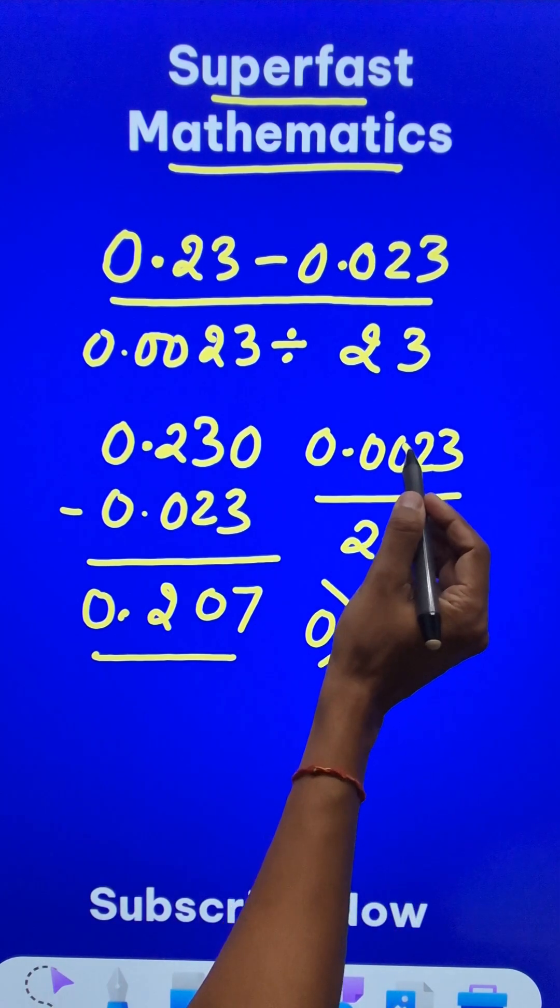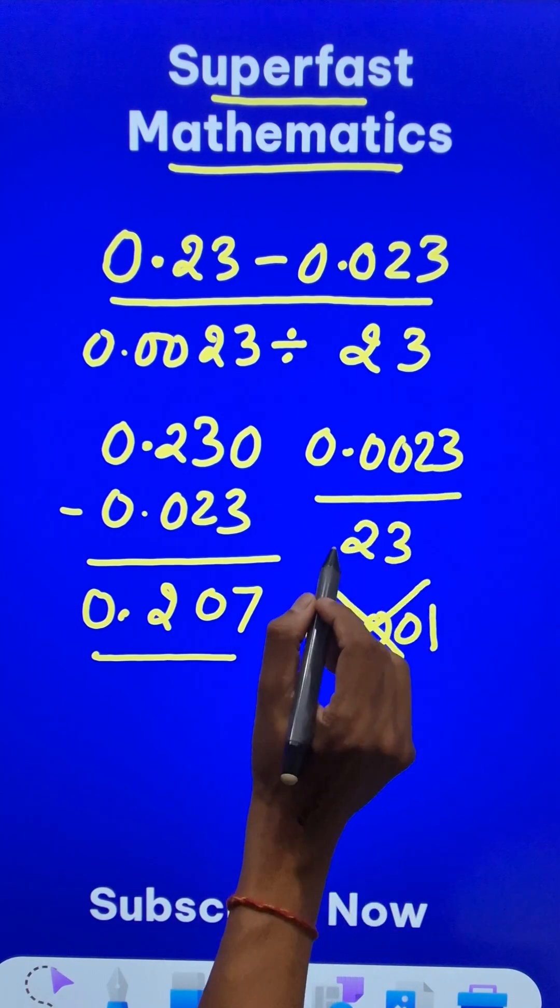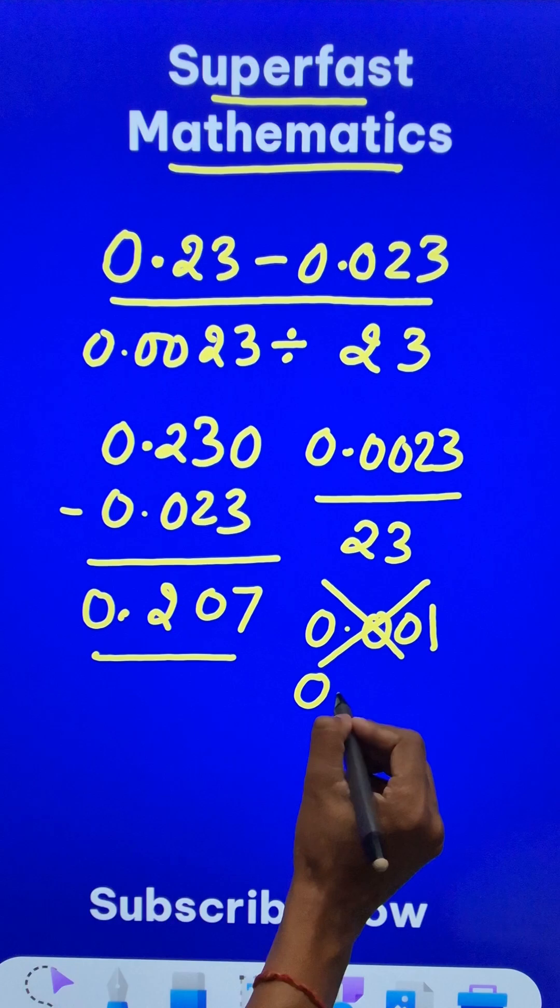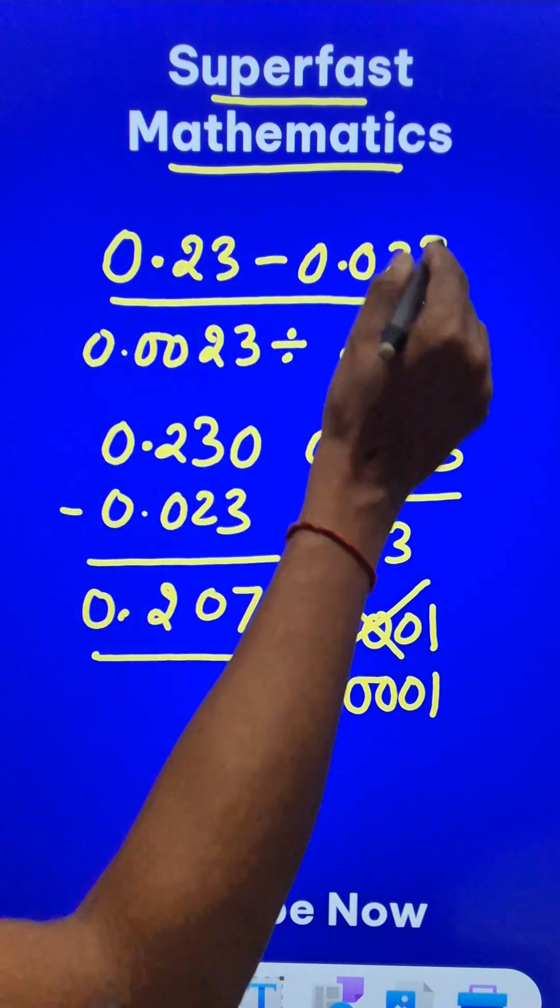23 doesn't divide 2. So you will have to put another 0, and the answer for the denominator will be 0.0001.